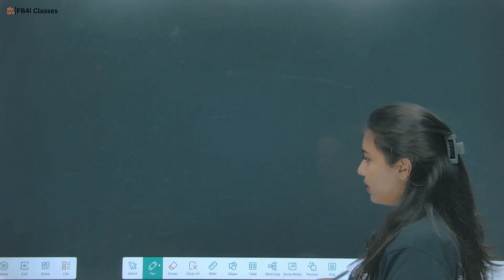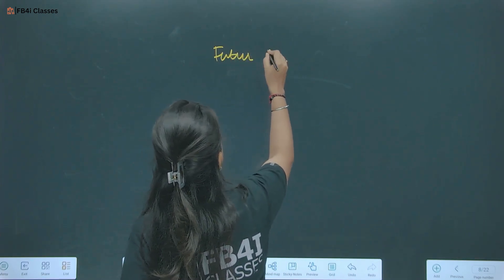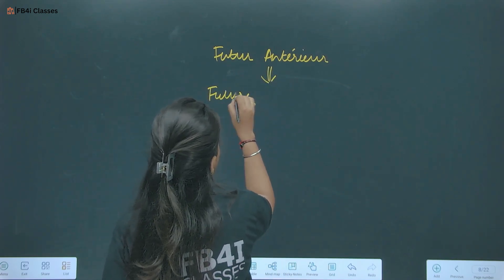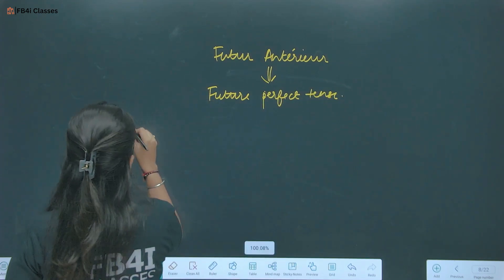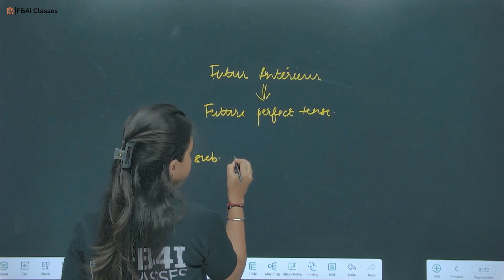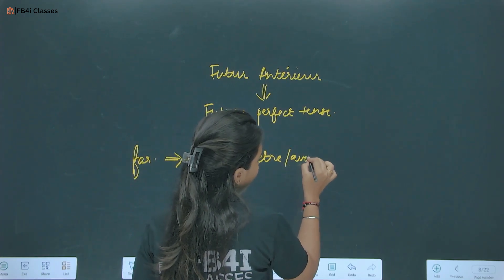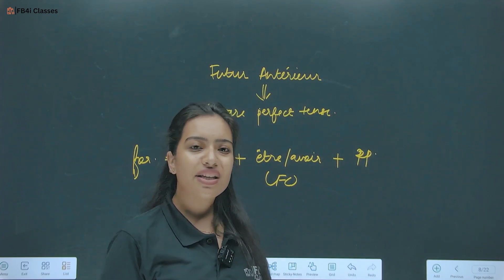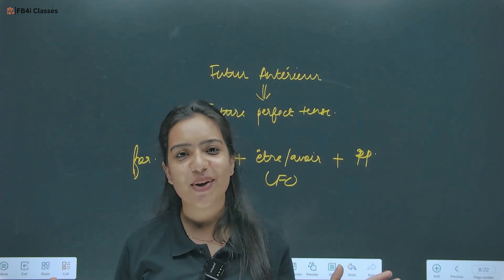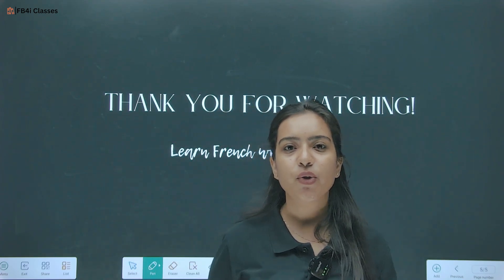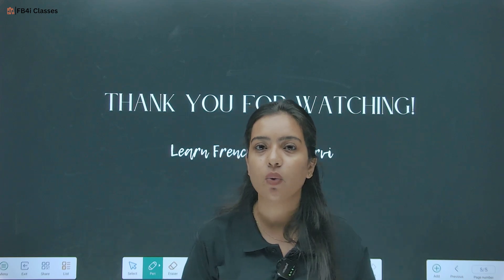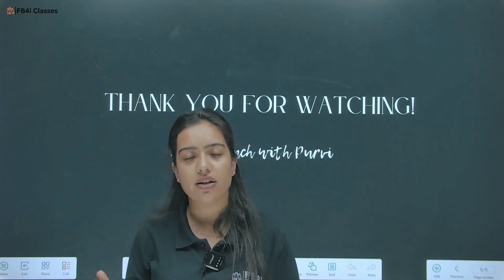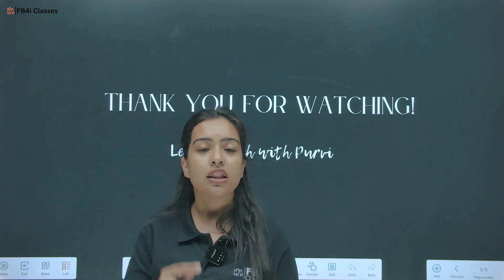Quick revision of Future Antérieur: it corresponds to the future perfect tense. Formation is subject + future conjugation of être or avoir + past participle of the verb. Remember the indicators. With that you are sorted for this tense. In the next part of this same lecture, we will cover the two letters — Education System of India and Education System of France.